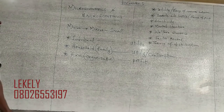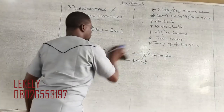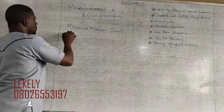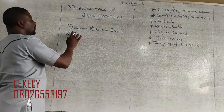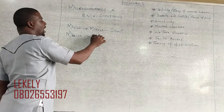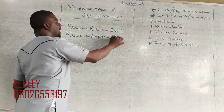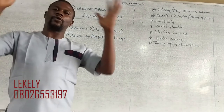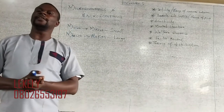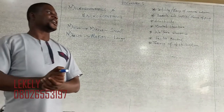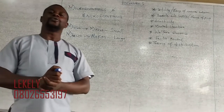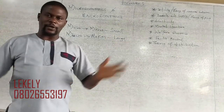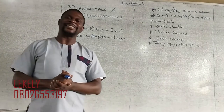The next thing we want to look at is macroeconomics. The word macro comes from the word 'macros,' which means large. Macroeconomics deals with the whole economy at large. It looks at how the government takes care of the economy at large, given that it is the government that takes care of the economy.